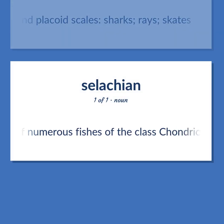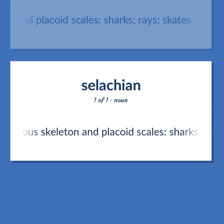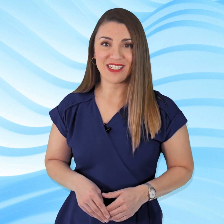Any of numerous fishes of the class Chondrichthyes, characterized by a cartilaginous skeleton and placoid scales: sharks, rays, skates. Become our student and get access to effective and free educational materials. Subscribe to our YouTube channel to become a part of our growing YouTube community, and to learn English effectively.